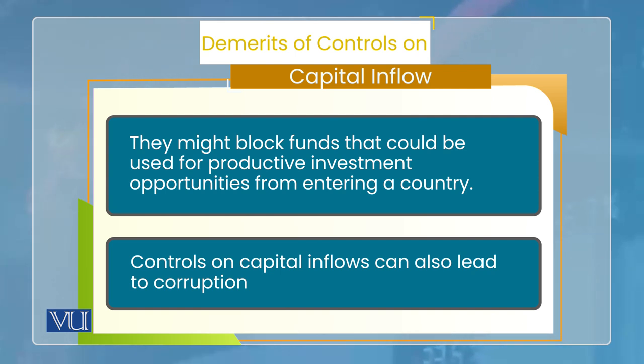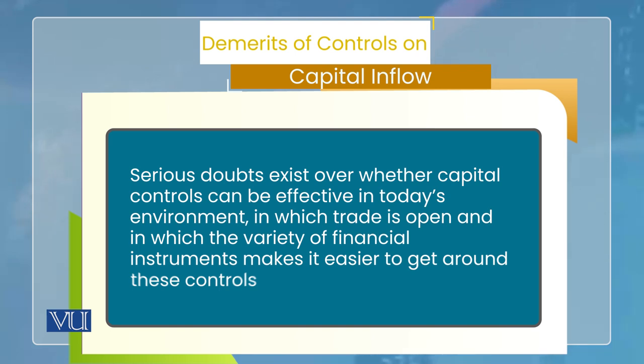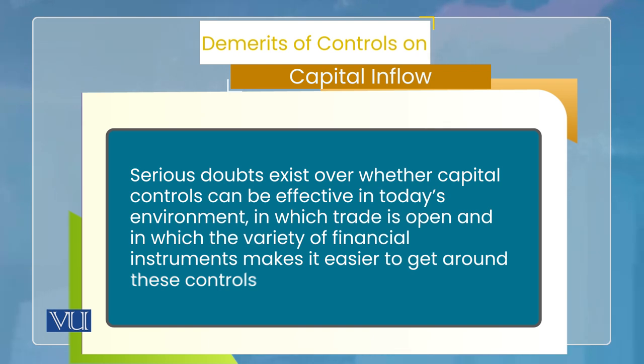دوسرا، capital inflow سے بھی corruption ہو سکتی ہے — اگر آپ نے inflow پر restriction لگا دی تو غلط یا informal channel سے سرمایہ آ سکتا ہے۔ اگر آپ کی economy میں investment profitable ہو تو capital کسی اور طریقے سے آ جائے گا — جو بظاہر capital investment نہیں ہوگی لیکن ہو capital investment رہی ہوگی۔ جیسے capital outflow کے بارے میں ہم نے کہا کہ آج کے modern world میں policy effective ہی نہ ہو، بالکل اسی طرح capital inflow پر control کی policy بھی effective نہ ہو۔